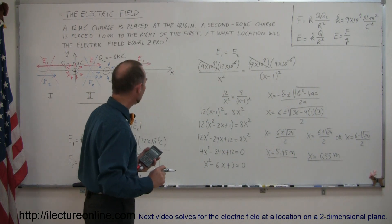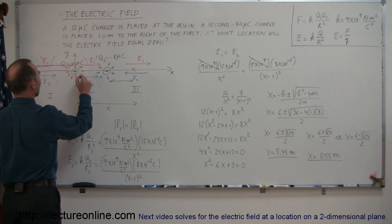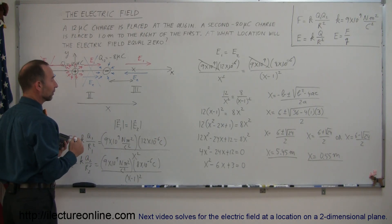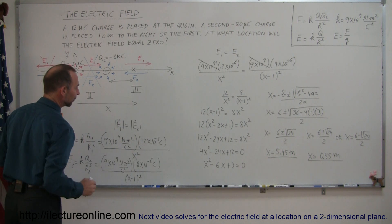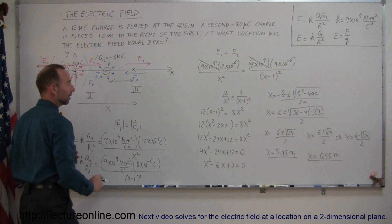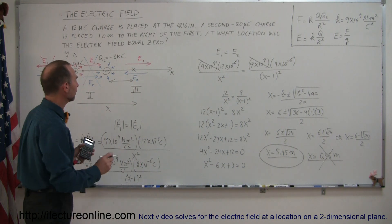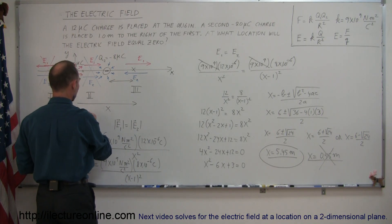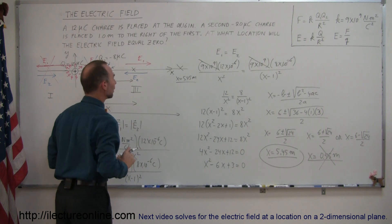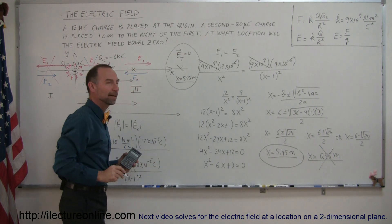We have two candidate answers: x = 0.55 m and x = 5.45 m. The value x = 0.55 m falls between the two charges — but we already determined that region two cannot be where the field is zero, since both fields point in the same direction there. That spurious answer arose from treating Q2's magnitude as positive. Logic eliminates it, leaving x = 5.45 meters as the valid answer. At that point, E_total = 0.